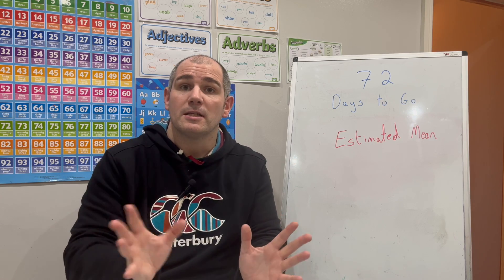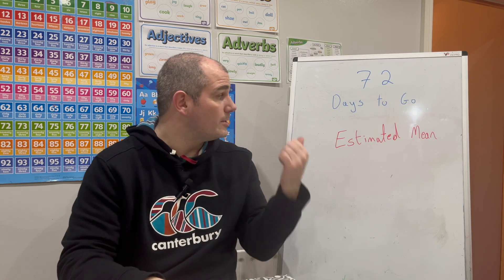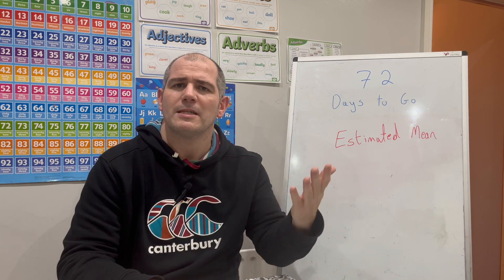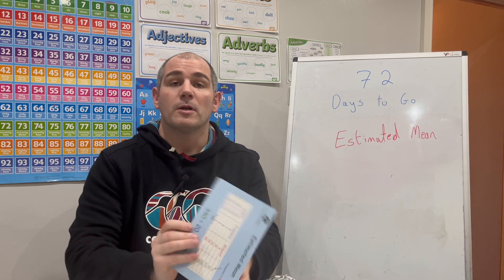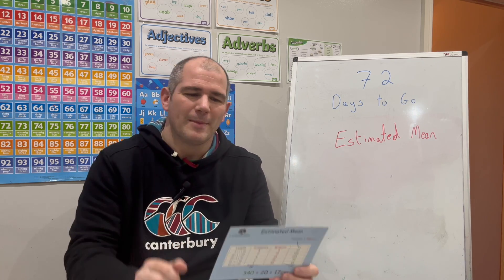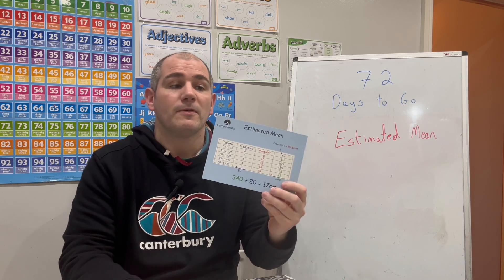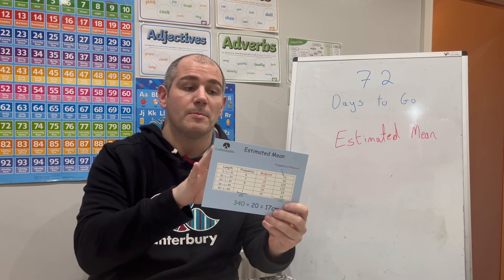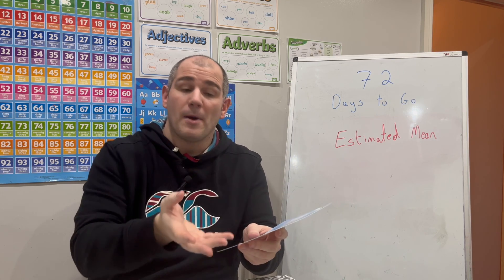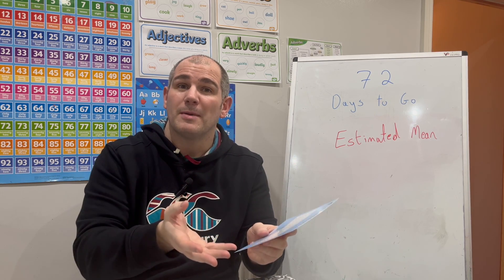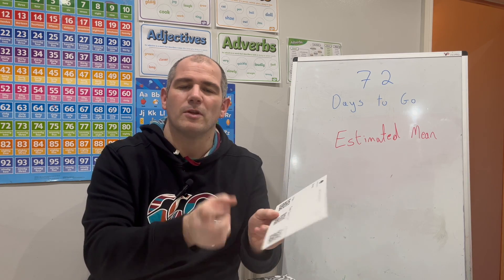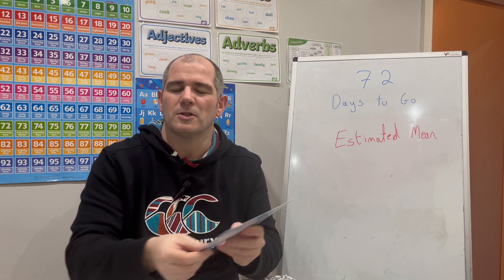Today we're doing a statistics topic. We're going to be doing the estimated mean, or the mean from grouped frequency tables. If you've got the revision card, which I highly recommend, card number 52 is the estimated mean revision card. It'll go through how to find the estimated mean from a grouped frequency table, and you've also got videos and questions on the back.